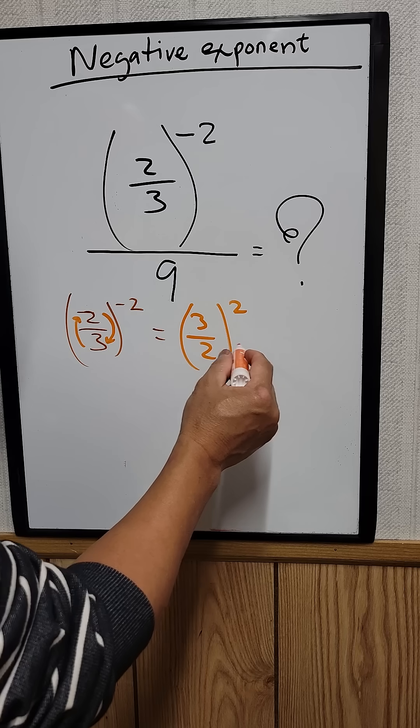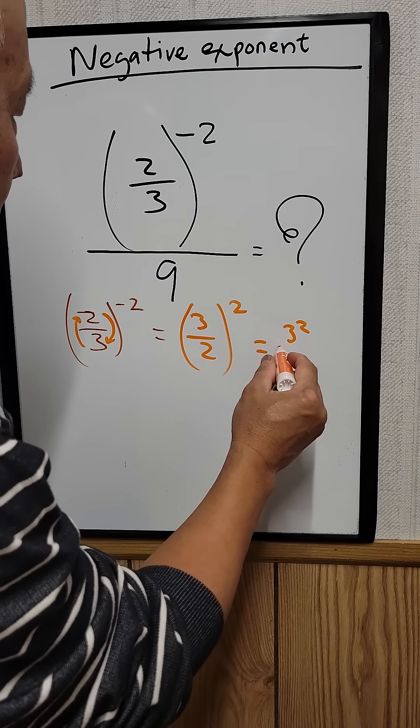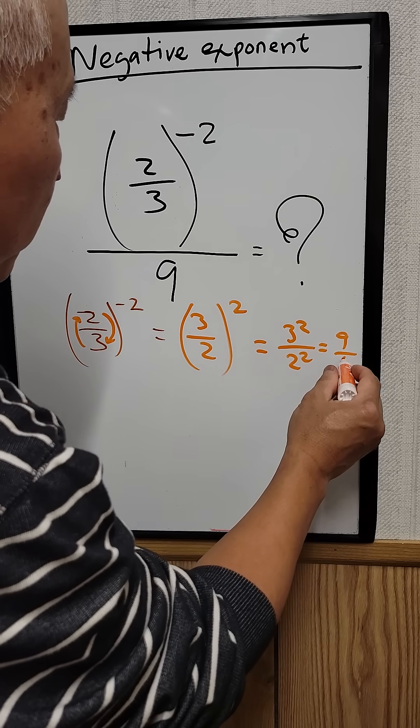So 3 over 2 raised to the 2 power. That's equal to 3 squared over 2 squared, which equals 9 over 4.